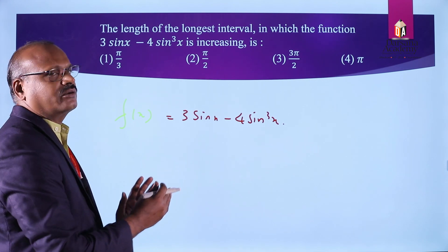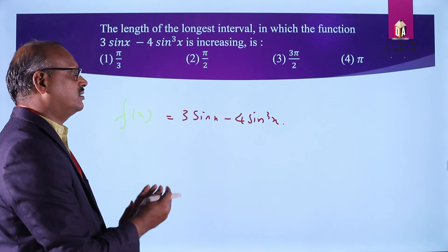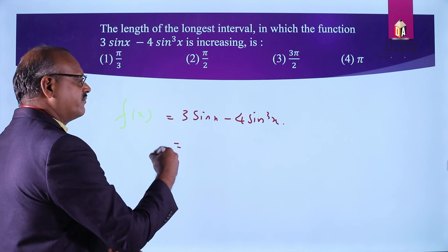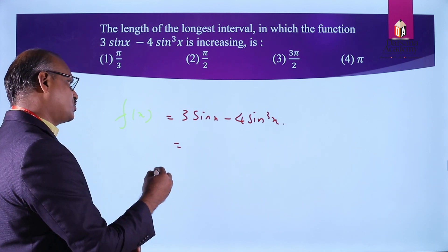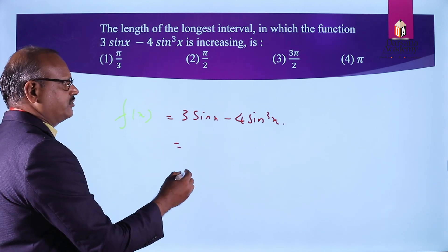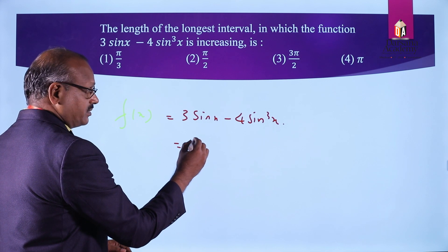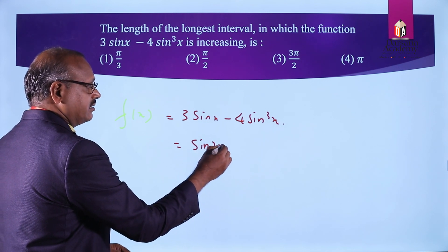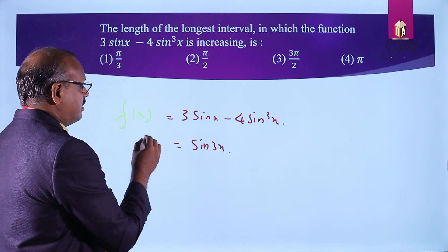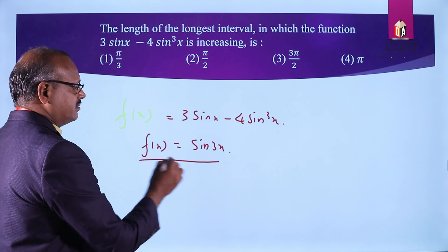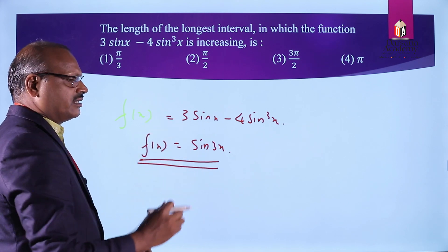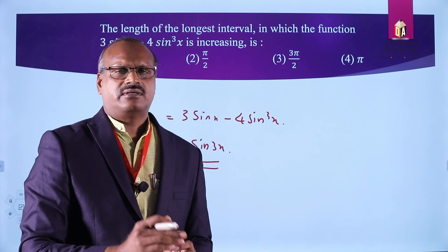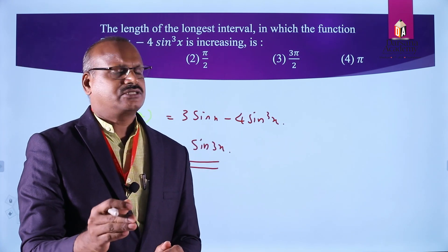This is a shortcut way. Now, how can we convert f(x)? We can rewrite 3sinx - 4sin³x as sin3x. So f(x) = sin3x. sin3x is a graphical way of representation.